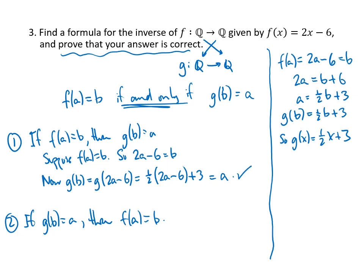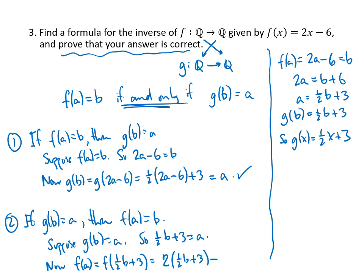Similarly for the other direction. So this time I would suppose that g(b) = a. That would mean that (1/2)b + 3 would equal a, because that's the formula for my g function. And I would say now, what's f(a)? I want that to be b, but that's f((1/2)b + 3). Plug into the f formula, so that's 2 times the thing you plugged in, (1/2)b + 3, minus 6, and work all that algebra out and it works out to be b. And that checks that direction as well.